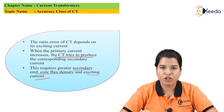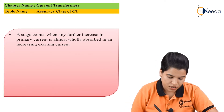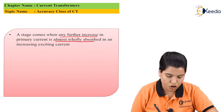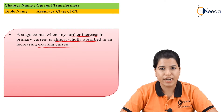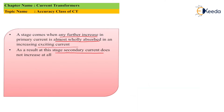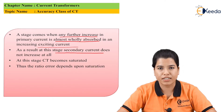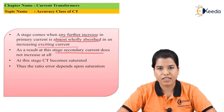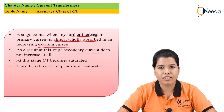As the primary winding has a greater number of turns, the voltage in the primary winding will be high compared to the secondary winding. During this process, a stage comes when any further increase in the primary current is almost wholly absorbed in the increasing exciting current. So if we go on increasing the primary winding current, whatever increase occurs will be absorbed by the exciting current I0. As a result, the secondary current will not increase at all. At this stage, the CT goes into saturation. The ratio error basically depends upon the saturation of the CT. CT will be saturated when primary current increases but there is no rise in secondary current, because the whole increase in primary current is absorbed by the exciting current I0, leaving no rise in secondary current.